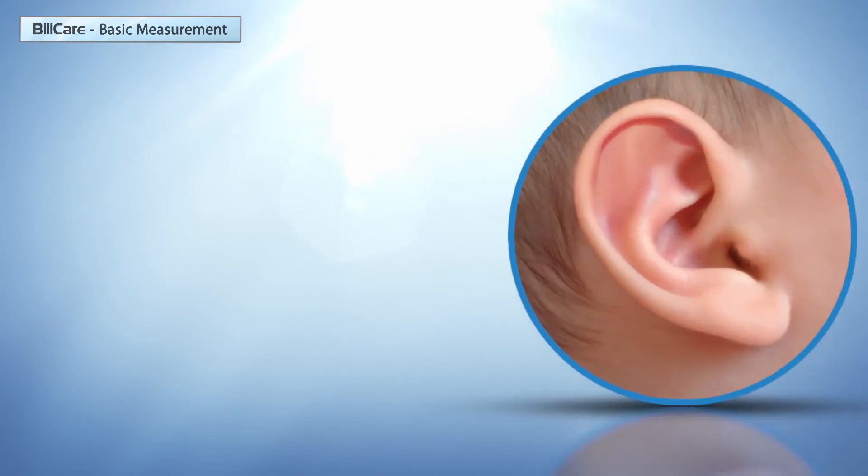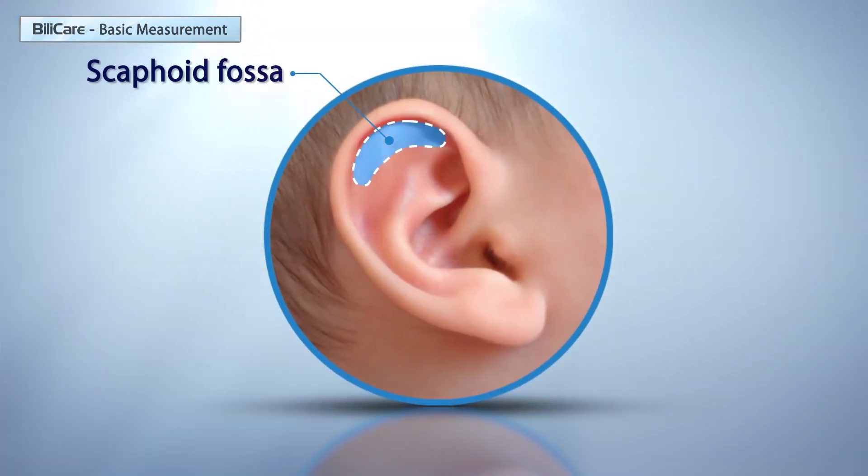Place the sensor on the upper side of the ear, in the scaphoid fossa, where the thickness is most consistent. Avoid placing the sensor on folds or malformations.